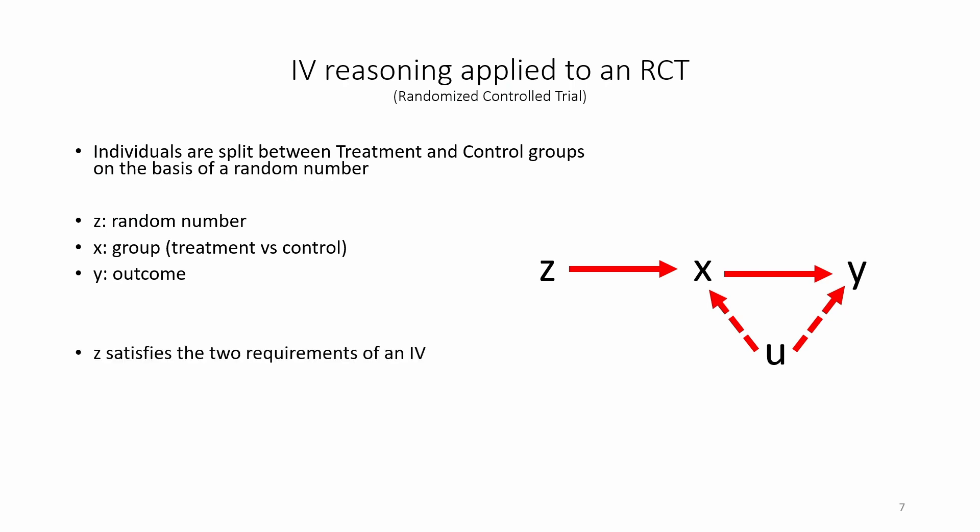Here we can see that Z satisfies the two requirements of an IV. According to the first stage, Z causes X. Yes, this makes sense if people receive a random number and are then split into treatment or control groups as a consequence of this number. Then we have the exclusion restriction, Z causes Y exclusively via X. Z is just an administrative number that has no health benefits of its own and does not affect health outcomes except via X.